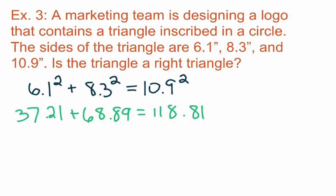So we're going to add 37.21 plus 68.89 to equal 106.1 equals 118.81.